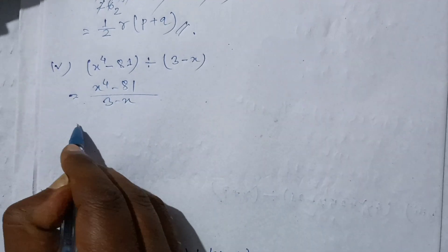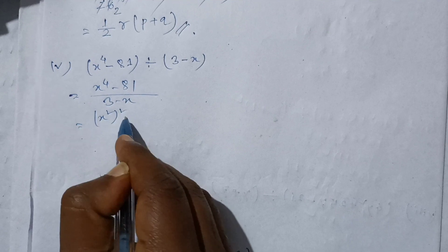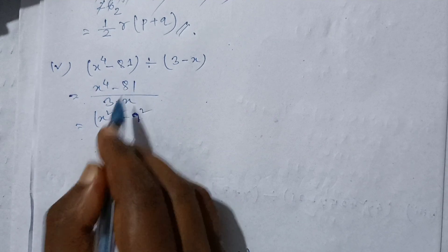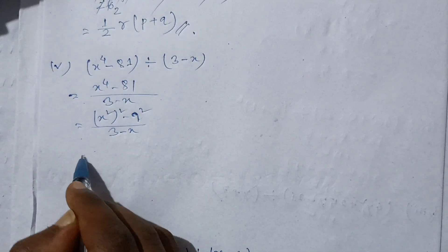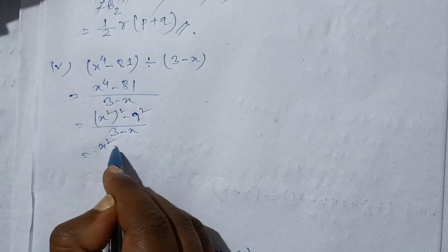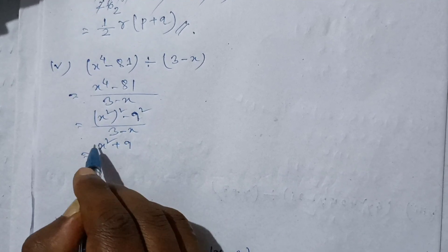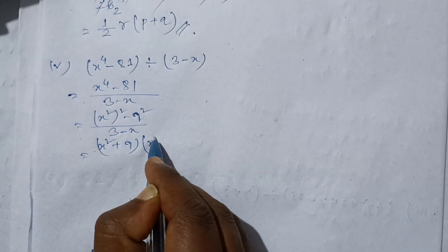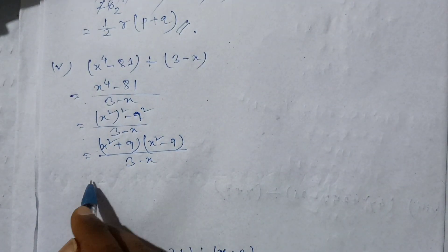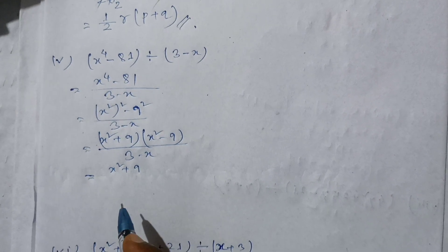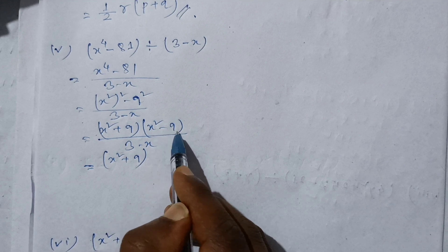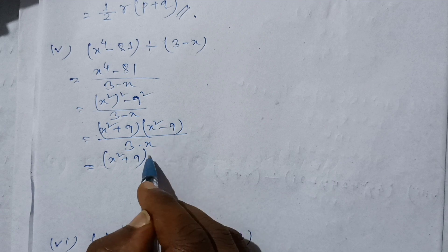The next question is x to the 4th minus 81 divided by 3 minus x. We rewrite x⁴ minus 81 as x squared whole square minus 9 squared. Using a squared minus b squared equals a plus b into a minus b, we get x squared plus 9 into x squared minus 9, and further x squared minus 9 equals x plus 3 into x minus 3.